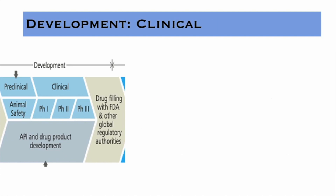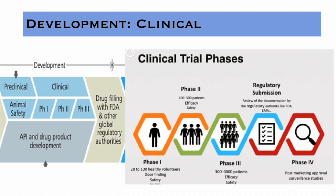After pre-clinical trials, we have clinical trials, which have three phases. In Phase 1, roughly 20 to 100 healthy volunteers test the lead molecule. In Phase 2, there are roughly 100 to 300 patients with effective safety testing. In Phase 3, there are approximately 300 to 3,000 patients for large-scale safety testing. If that stage is passed, there is regulatory submission to the FDA or EMA. Phase 4 is a post-marketing approval stage under surveillance studies after the drug launches.